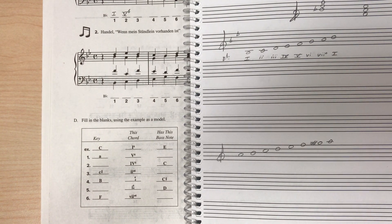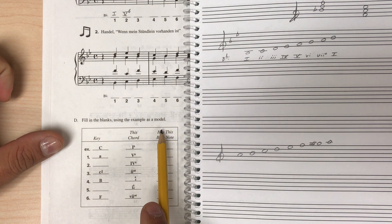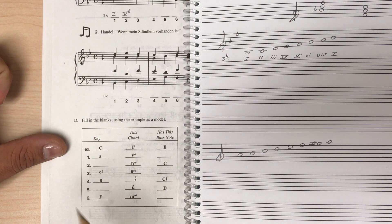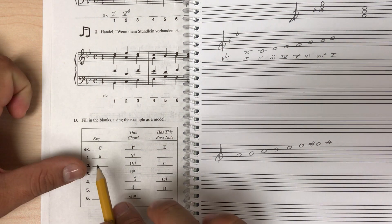This is exercise 4-1 part D. Here we're filling in the blanks using the example as a model. So here we're again going to want to use our scratch paper to figure out what's going on.